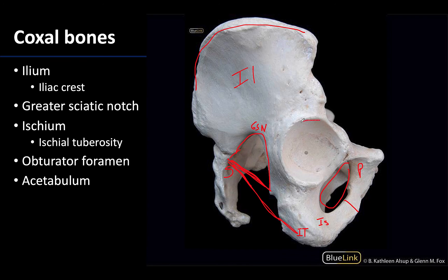You can't look at a lateral view without observing the very large, very prominent acetabulum — the socket portion of the ball-and-socket hip joint, where the head of the femur will articulate. It is actually composed of all three bones, with that fusion occurring within the acetabulum during development. The ilium, pubis, and ischium fuse right in this region, and this area is mostly smooth, with articular cartilage sitting here during life as in any synovial joint.